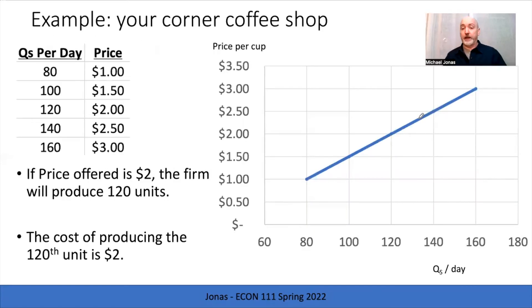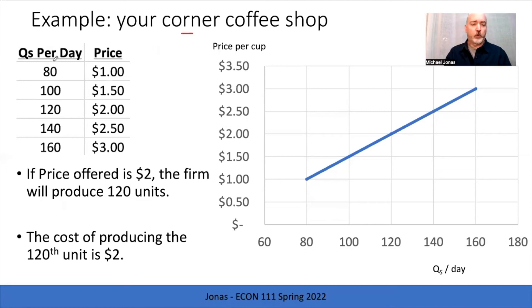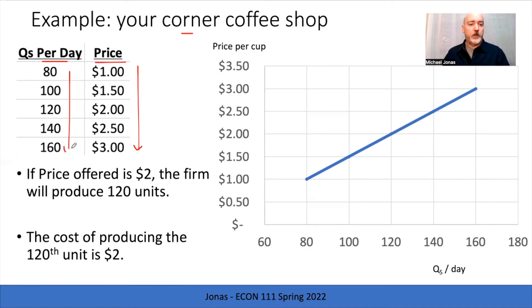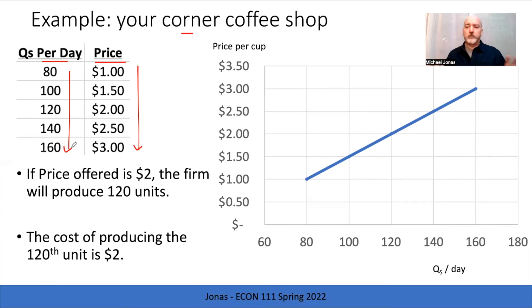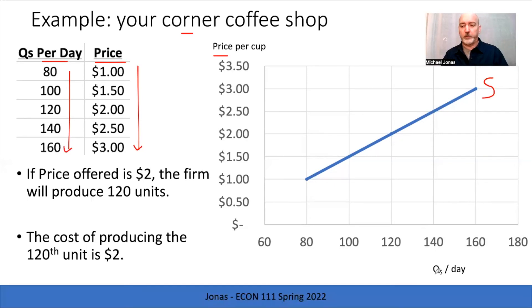Either way you slice it, we end up with a positive, upward-sloping relationship. A relatable example: thinking about production from a corner coffee shop, tracking the number of cups of coffee produced per day based on the market price. As price rises at 50-cent increments, the ability and willingness of the firm to produce also rises at 20-unit increments in quantity supplied per day. Label the curve with a big S, and our axes are price and quantity supplied per day.